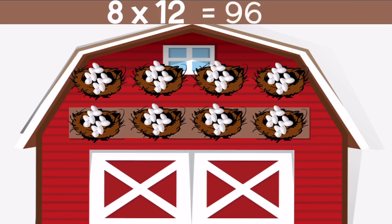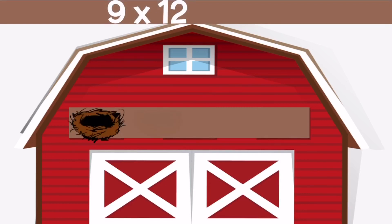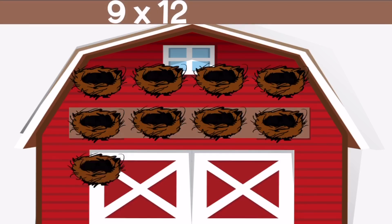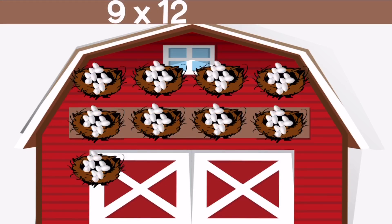9 times 12 — we need 9 nests with 12 eggs inside of each nest. When we count up all of the eggs we get 108.